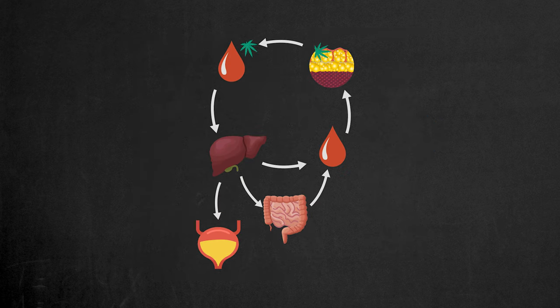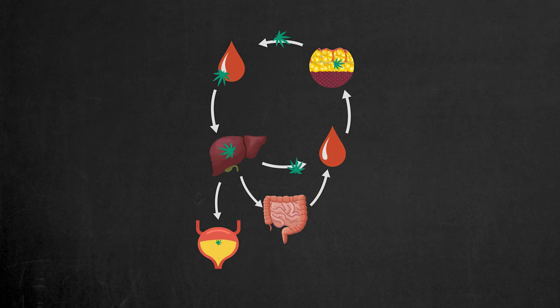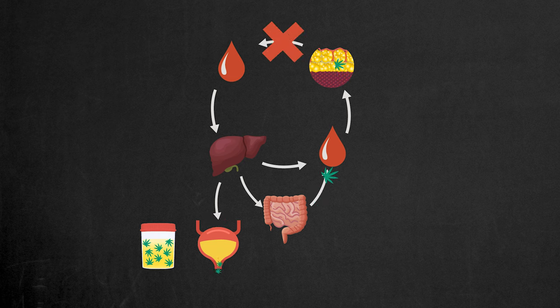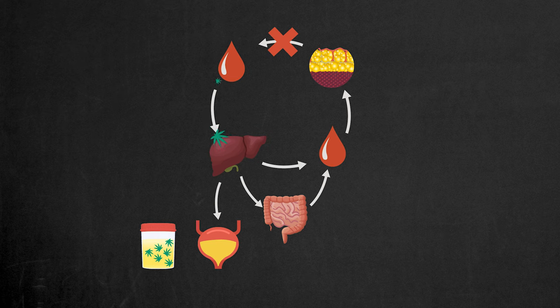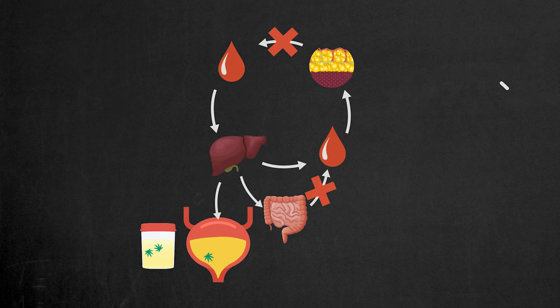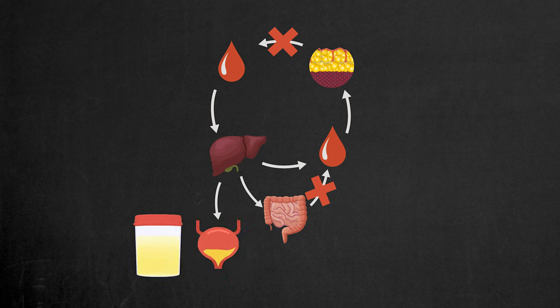Same day detox or flushing helps to pass a drug test by doing the following. It stops the breakdown of body fat and prevents the excretion of THC from the fat into the blood. It prevents the reabsorption of THC into the blood from the intestines, slows the metabolism of THC in the liver, preventing it from getting into the urine, makes you urinate, flushing THC from your bladder. It also restores the natural urine parameters and color so your sample will not be rejected as diluted.